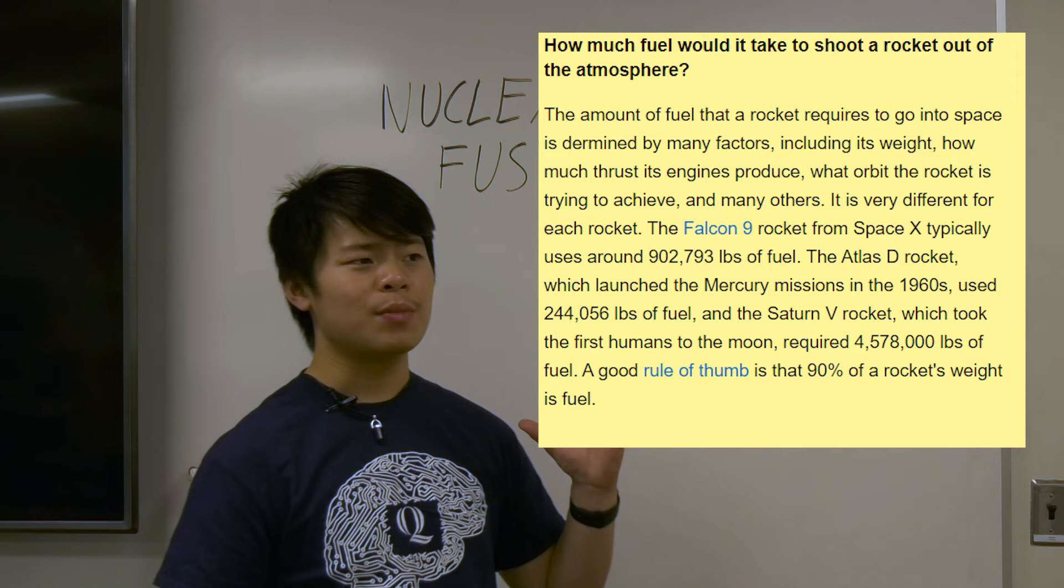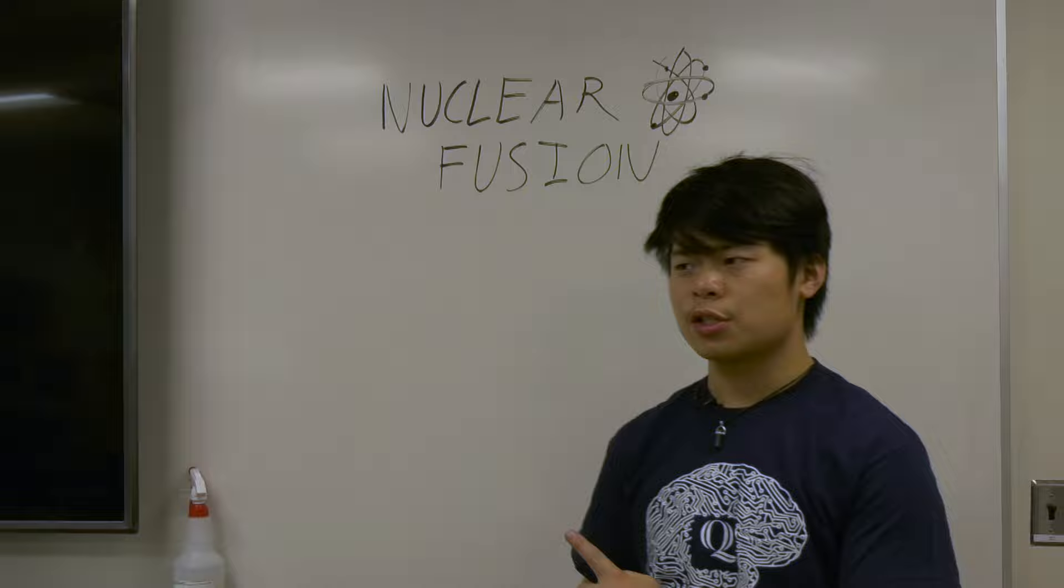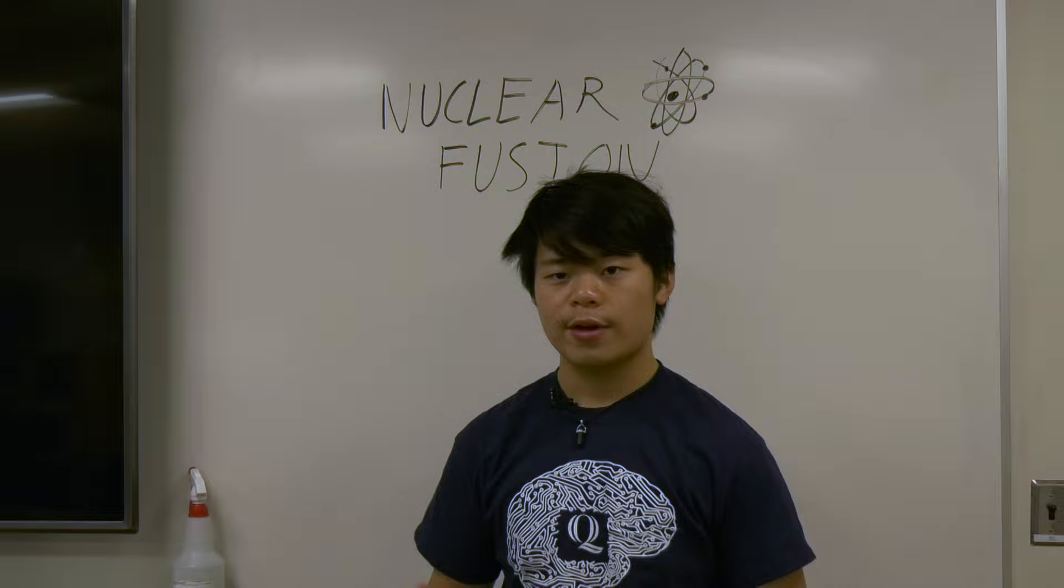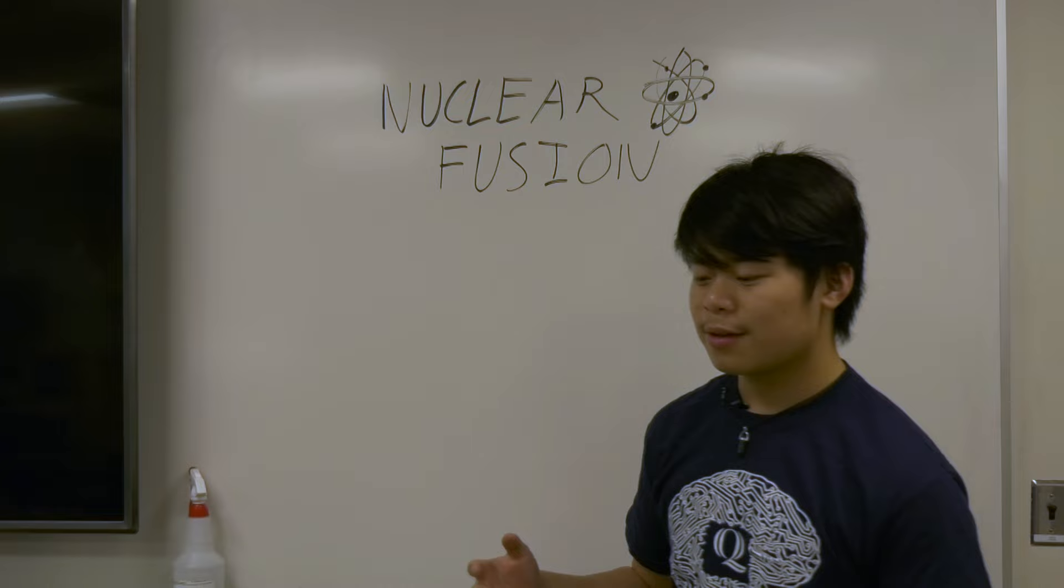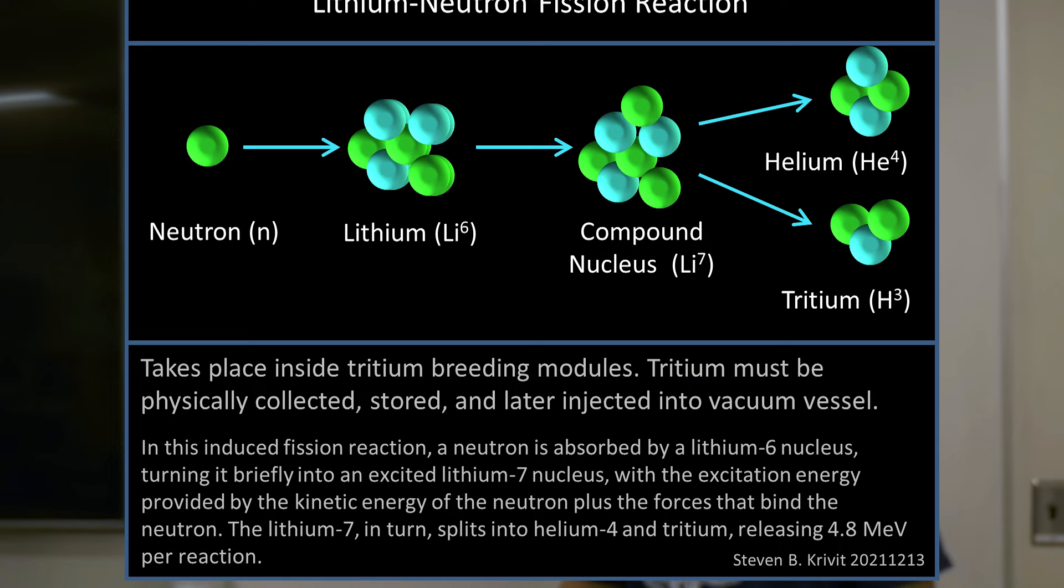Another benefit of fusion energy is that it is very abundant. The most popular choice for fusion fuel is these isotopes of hydrogen called deuterium and tritium. These two variations of hydrogen sounds like something that might take a lot of effort to obtain. But the truth is, deuterium could be extracted from water. And tritium, while requiring some manufacturing, can be produced with relative ease.